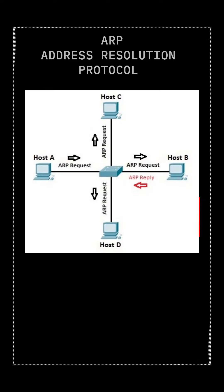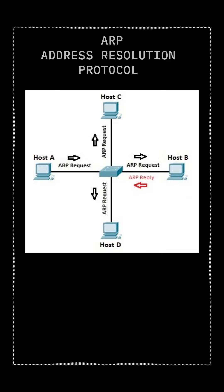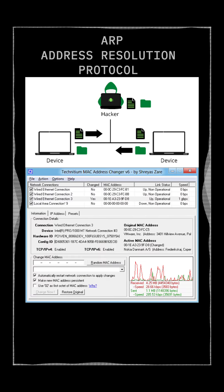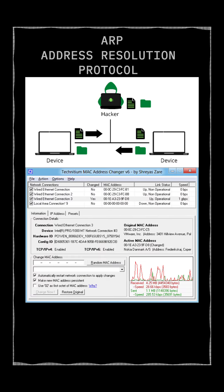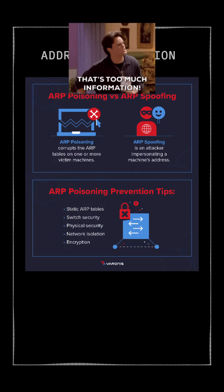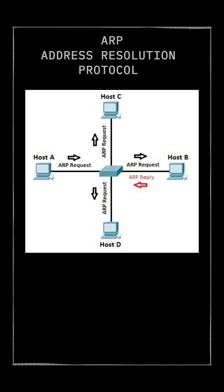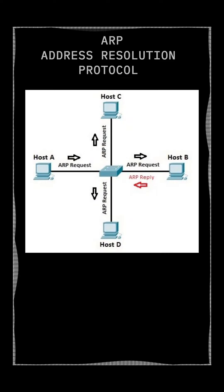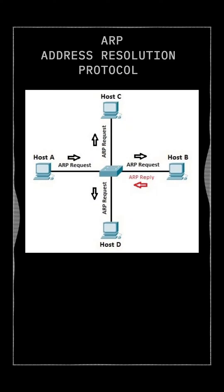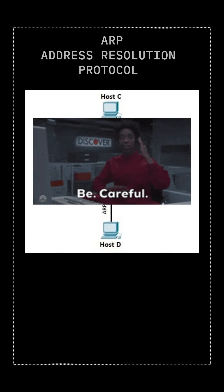ARP and Cybersecurity: While ARP is essential for network communication, it can also be exploited by attackers. ARP spoofing: an attacker can send fake ARP replies, claiming to be another device, redirecting traffic to the attacker's machine. ARP poisoning: similar to spoofing, it involves flooding the network with fake ARP replies to disrupt communication. In summary, ARP is a fundamental protocol in network communication. Understanding how it works is crucial for cybersecurity professionals — be aware of potential attacks like ARP spoofing and poisoning to protect your network.